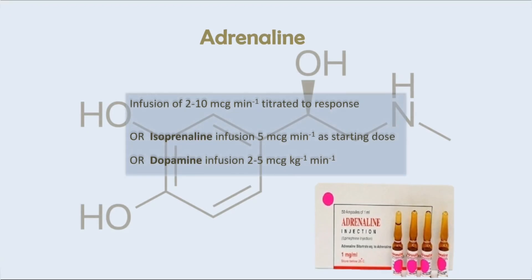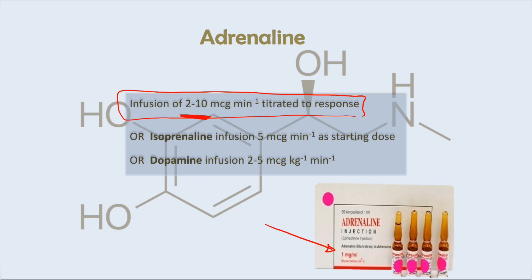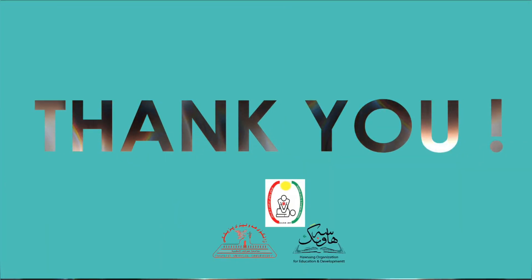For adrenaline used as an interim measure in bradycardia, the dose is an infusion of 2 to 10 micrograms per minute. Note that each ampoule of adrenaline contains one milligram, which equals 1000 micrograms. Start at 2 micrograms per minute and increase up to 10 micrograms per minute until the patient responds.